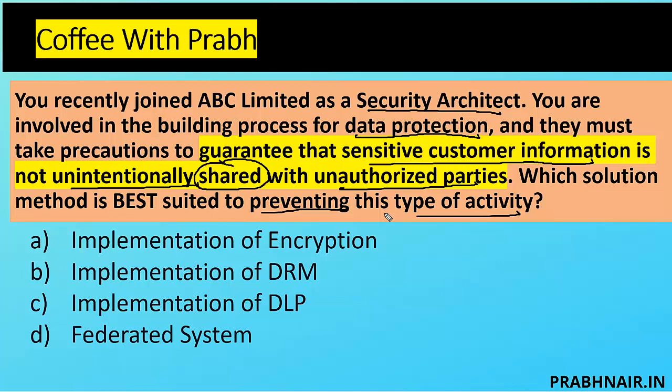You might think the answer is encryption, but encryption is used to protect against unauthorized disclosure. The question specifically talks about restriction of sharing. Even encrypted data can be shared — if the recipient doesn't have the key they can't access it, but the question is about unintentionally sharing, so we want to restrict that movement. Encryption is removed. DRM is used in the data-in-use stage; for example, you're watching a video that's already released, so DRM cannot be the answer.